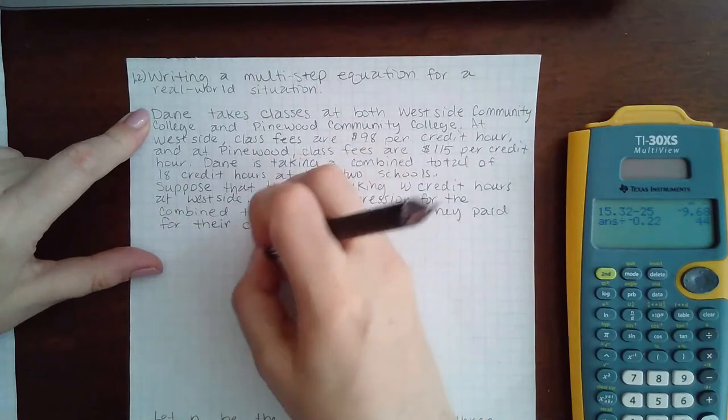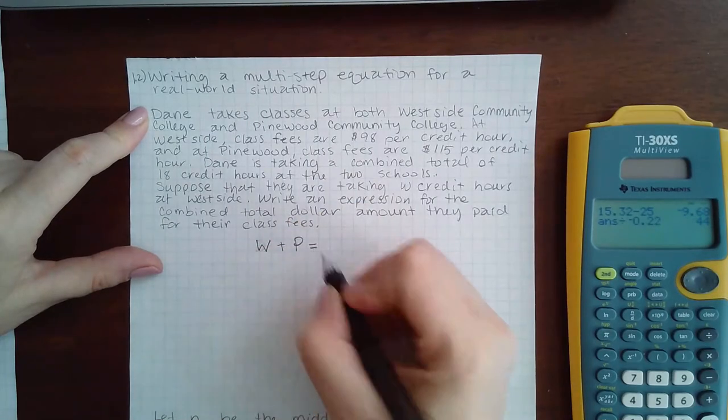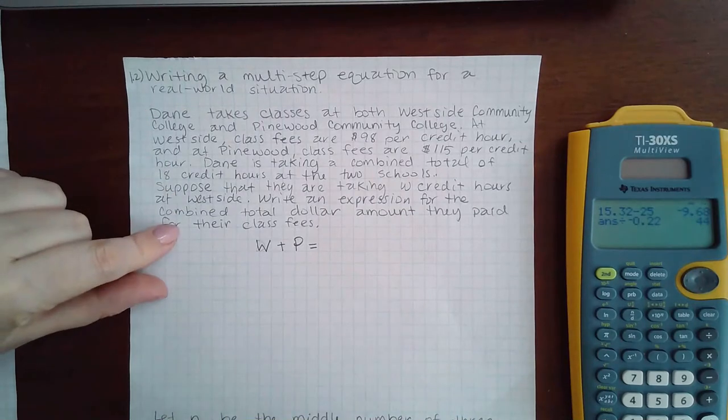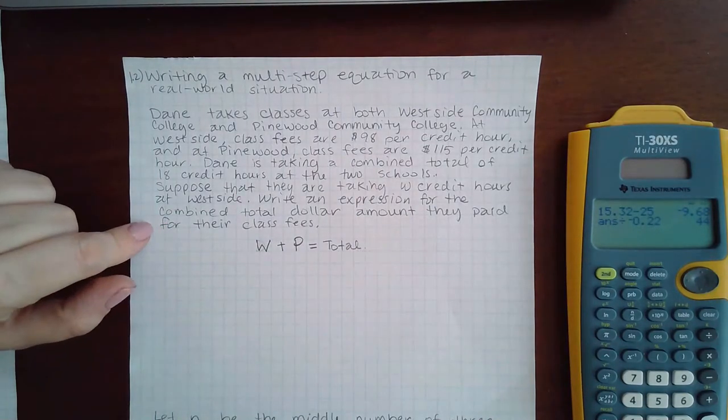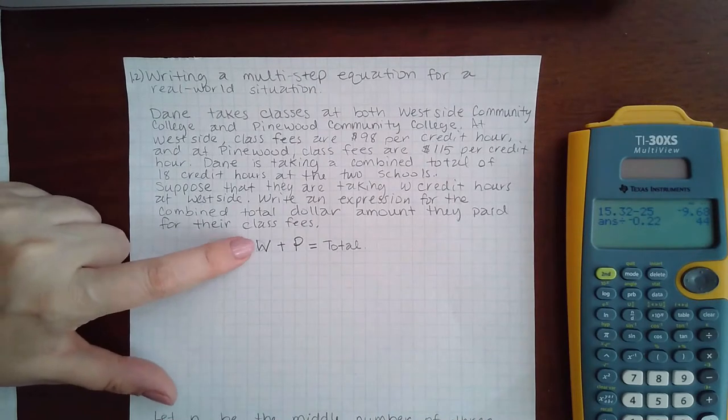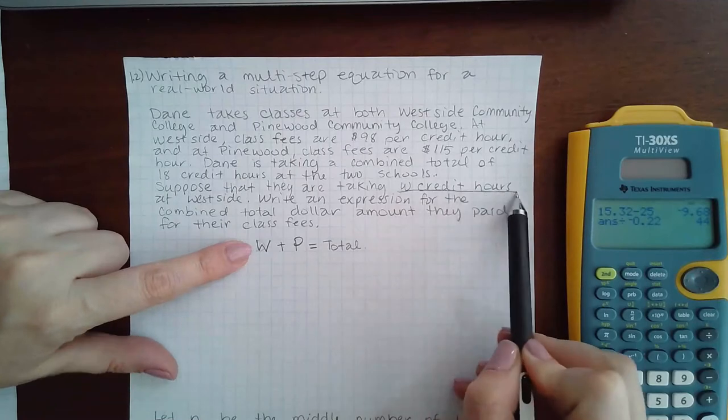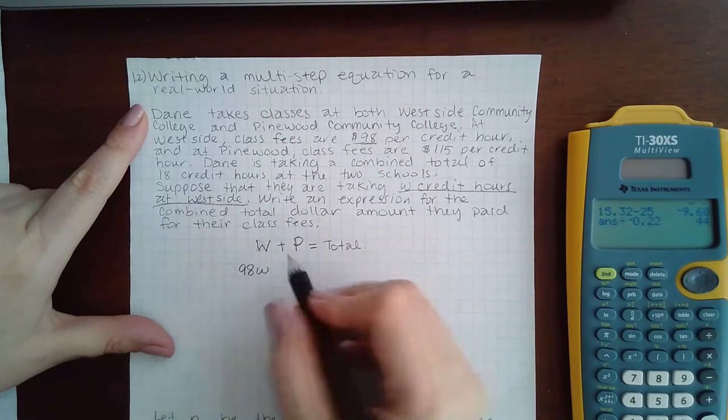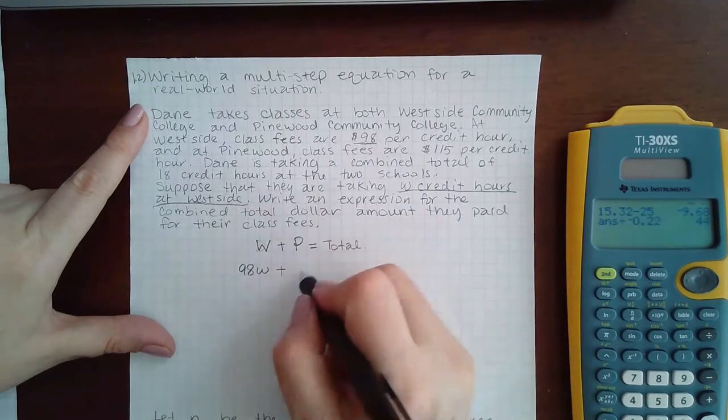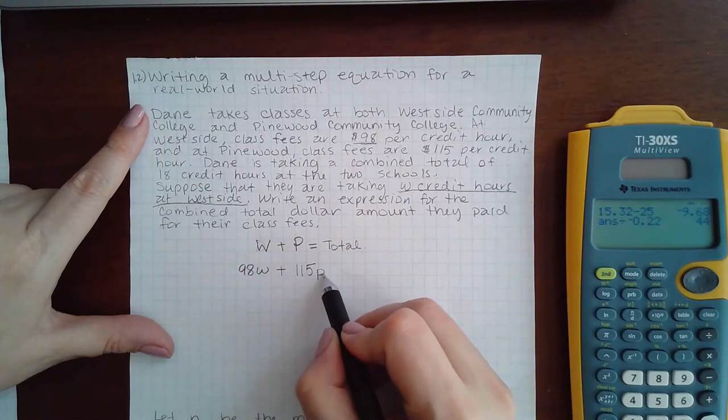What they're asking us to do is they're saying that for Westside he has to pay $98 per credit hour, and he's taking W credit hours at Westside. So I know exactly what to multiply: it's 98 times the lowercase w. Plus, I know that at Pinewood it's $115 per the number of hours that he has to take at Pinewood.